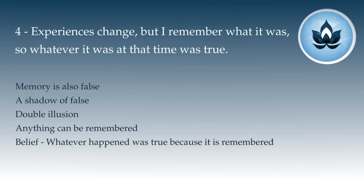Number four: experiences change but I remember what it was, so whatever it was at that time was true. The argument is: if something is an illusion because it changed and is gone—but wait, I still remember that it was there. So when it was happening, it was actually real. How do I know it was real? Because I remember it. If it were totally false, there was no question of even knowing it or remembering it. So it must have happened—its happening is true. Probably the colors and shapes and sounds it produced were complete illusions, but it happened. Something about it must be true. That is a more sophisticated way of asking this question.